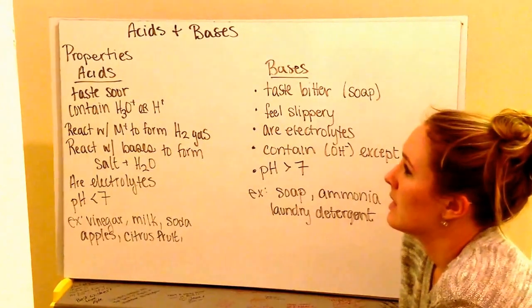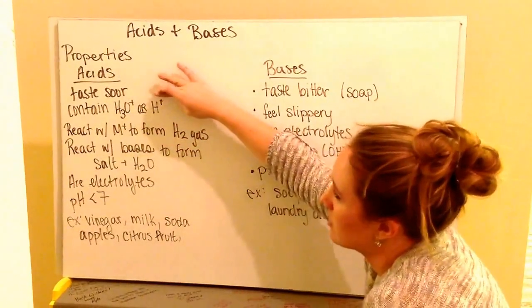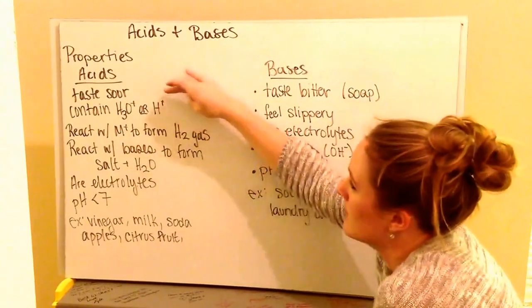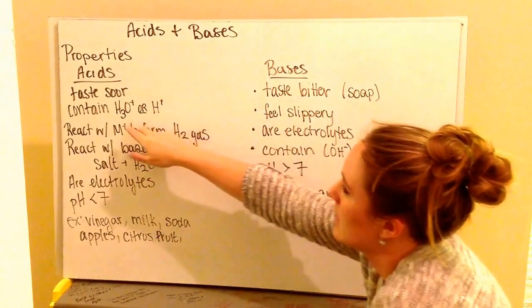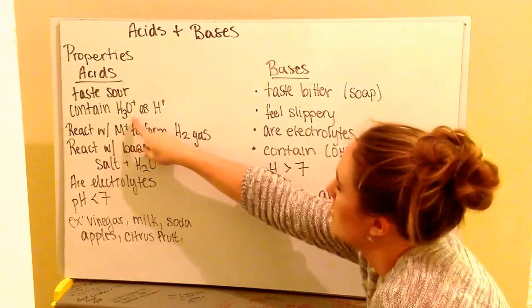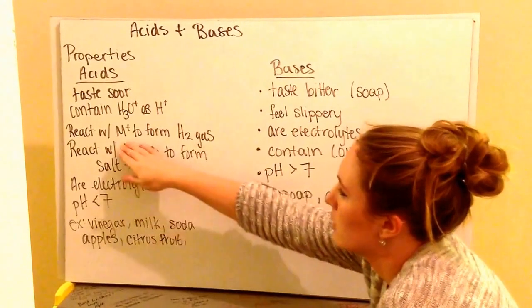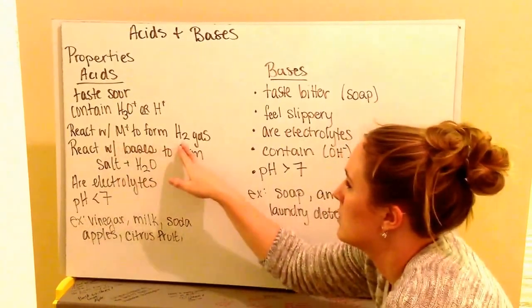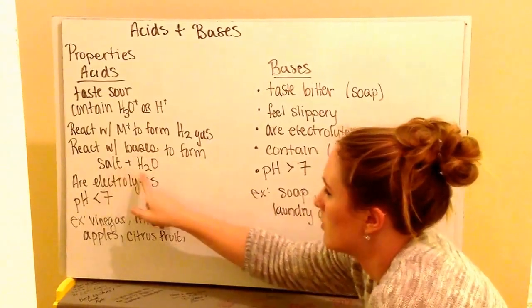So acids and bases, a couple of different properties with them. For acids, they're going to taste sour, so things like lemons taste sour, or acidic items that taste sour. They contain H3O+, which is a hydronium ion, or a hydrogen ion, which is H+. They react with a metal to form hydrogen gas. They react with bases to form a salt plus water.